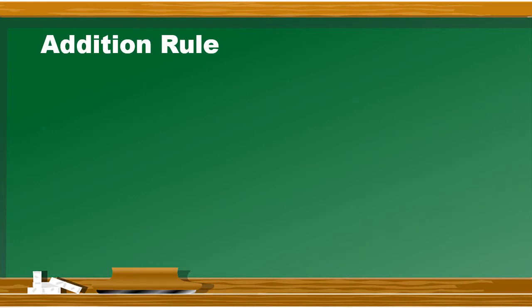अब जो मैंने vector space में rules की बात की थी, उसमें से पहला rule देखते हैं - वो है addition rule. Addition rule की कुछ properties हैं. उसमें पहली property है closure property. For example हमारे पास दो vectors हैं psi and phi - ये दो vectors basically vector space के elements हैं. जब इन दो vectors को add किया जाएगा तो add करके कोई third vector बनेगा और वो third vector भी इसी vector space का an element होगा. तो इसको closure property का नाम दिया जाता है.